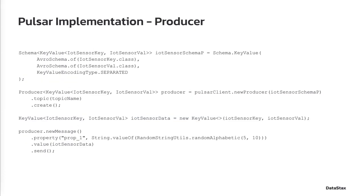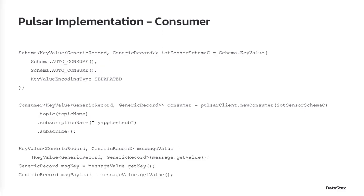This is an example of the Pulsar producer that publishes IoT sensor data following the message schema design we've seen in the previous slide. This is also an example of a Pulsar consumer that consumes the IoT sensor data following our message schema design.